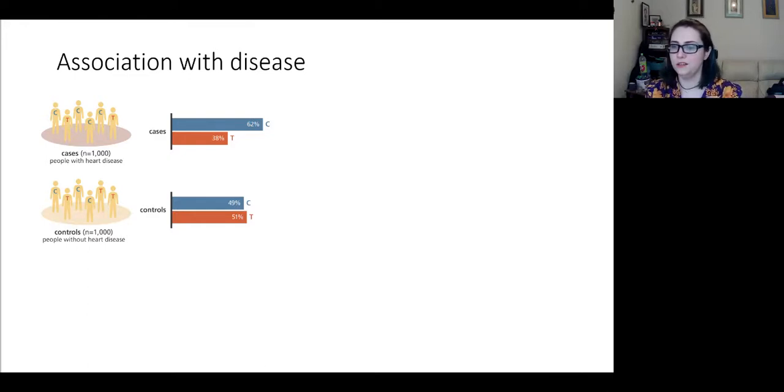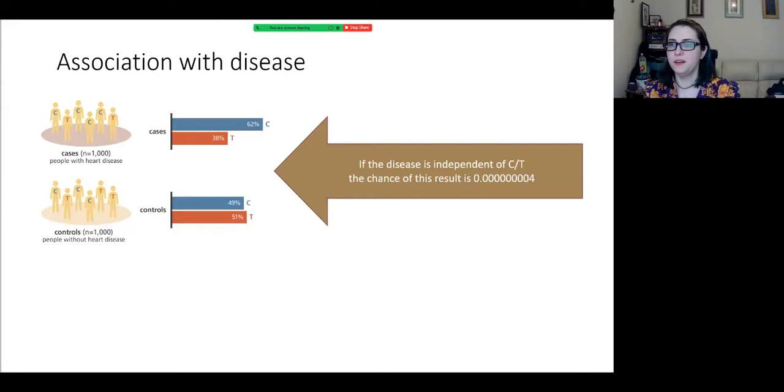We can talk about this as an association, that certain variants are associated with people having a particular disease. So the example I've put up, in one case, there are far more copies of the C variant in people with heart disease than in people without heart disease. And the chance of this happening randomly is very, very small. What these variants do is show us areas that might be causing the problems that lead to this disease, but also possibly not. Variants tend to move around in blocks and the actual cause might be in a nearby region.